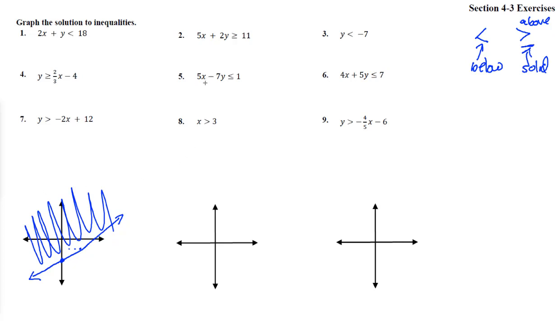Alright, number 5. Subtract 5x from both sides, and we get negative 7y is less than or equal to negative 5x plus 1. Now when we divide by a negative 7 everywhere to get that y by itself, remember what happens. Dividing by a negative, it changes that less than sign to a greater than sign.